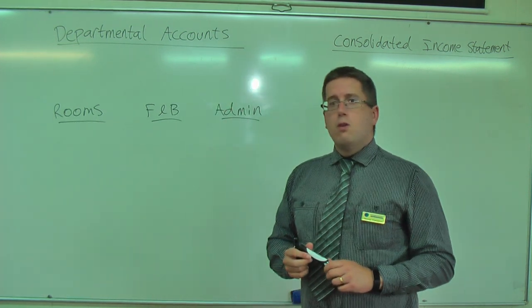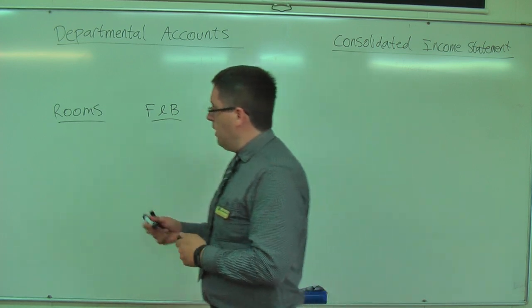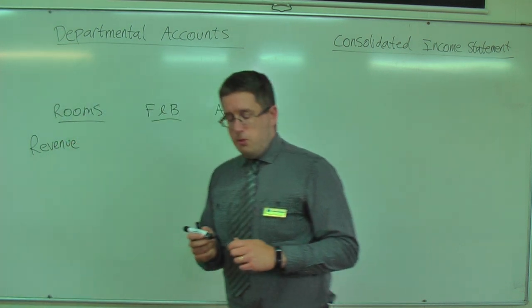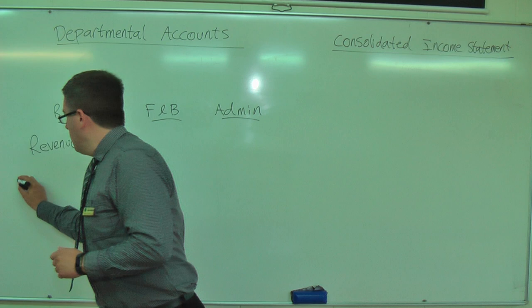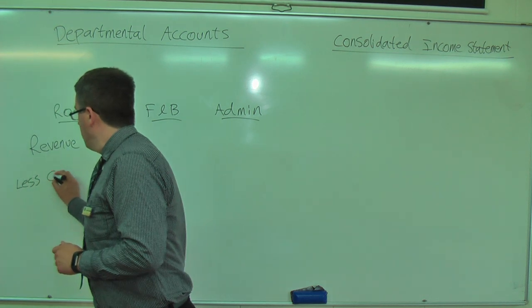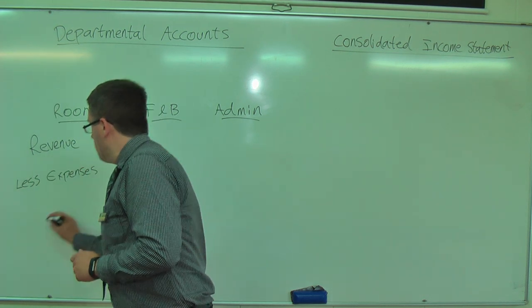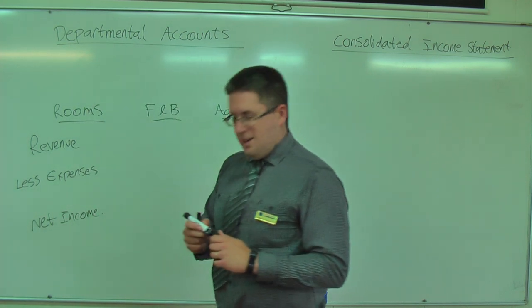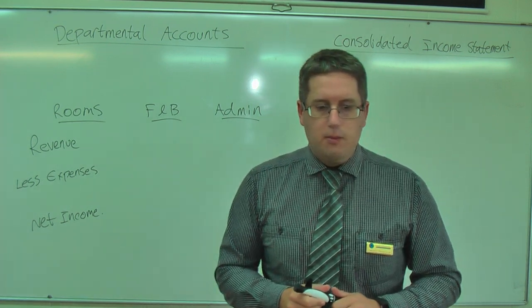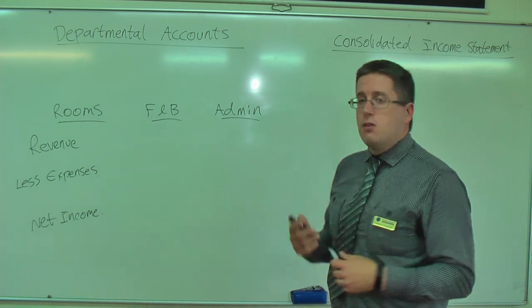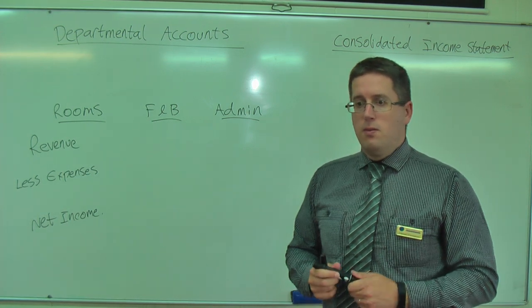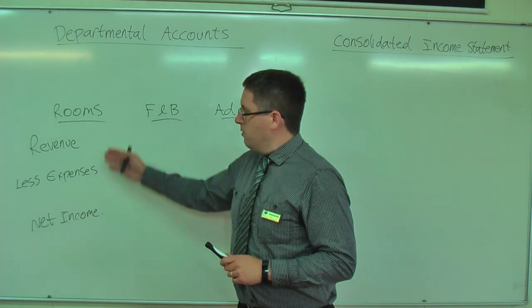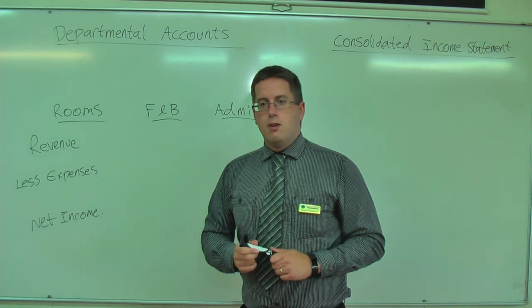We would look through and see what relates to the rooms department, for example, and we would find all the revenue items that relate to that department. Then we take away all the expenses, and that gives us what we call a net income. Net income - think of it like a net profit of that department. That's what that department has contributed. So for rooms it's pretty easy: revenue minus these expenses gives us our net income.